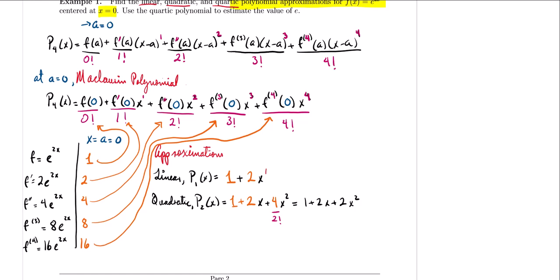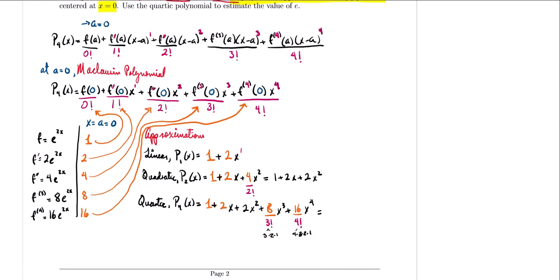For the quartic approximation, p sub 4 of x equals 1 plus 2x plus 2x squared, plus the third order term: coefficient 8 divided by 3 factorial times x cubed, plus the fourth order term: coefficient 16 divided by 4 factorial times x to the fourth. Simplifying — 3 factorial is 6, so 8 over 6 is 4 thirds; 4 factorial is 24, so 16 over 24 is 2 thirds — we get p sub 4 of x equals 1 plus 2x plus 2x squared plus four-thirds x cubed plus two-thirds x to the fourth. This is our fourth order approximation for e to the 2x.